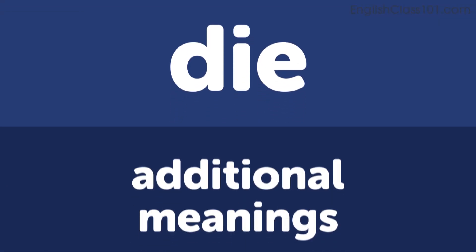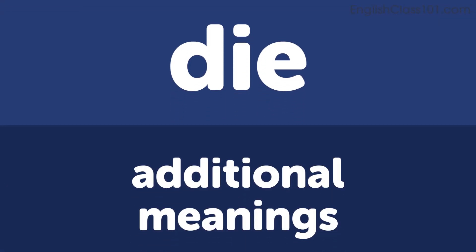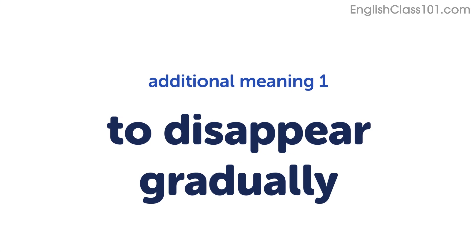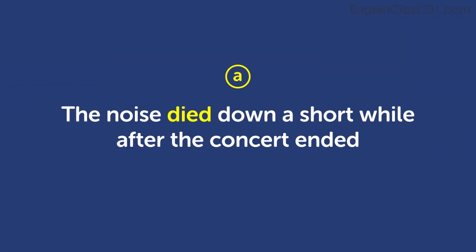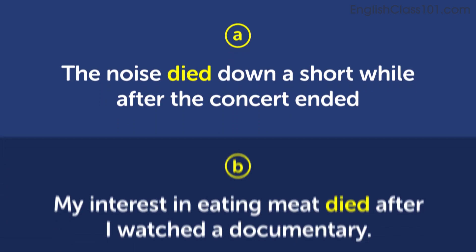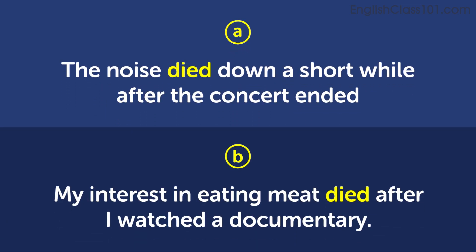Now let's talk about some additional meanings for this verb. The first additional meaning for this lesson is to disappear gradually. Some examples: The noise died down a short while after the concert ended. My interest in eating meat died after I watched a documentary.